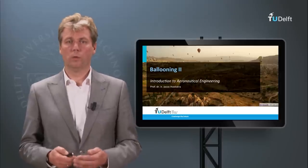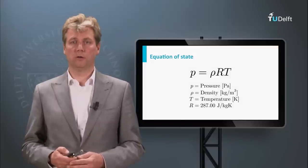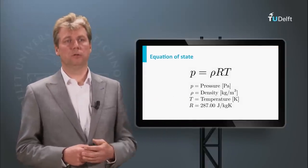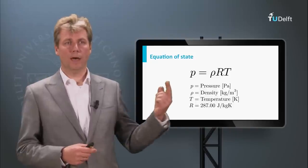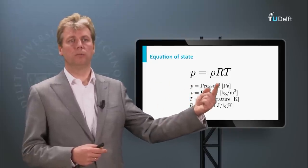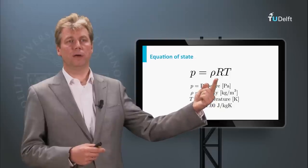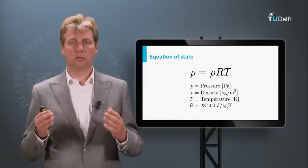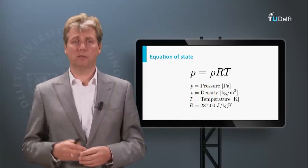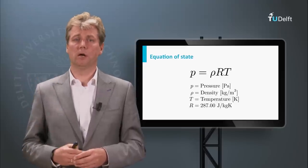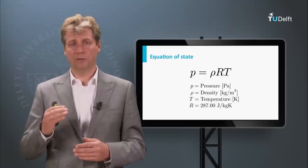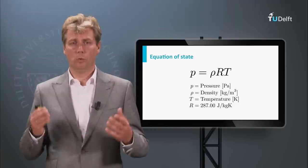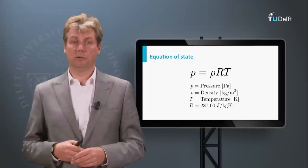Last time we derived our equation of state, which shows a different version of the gas law. We have to keep in mind that this R is not the universal gas constant R, but it is the specific gas constant, equal to the universal gas constant R divided by the molar mass — because when we look at different types of gas, we will have to use different molar masses.